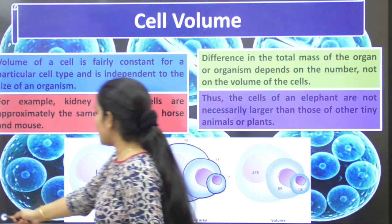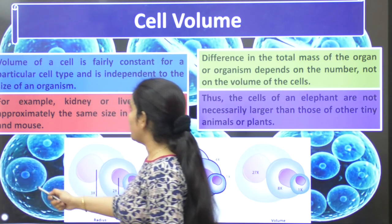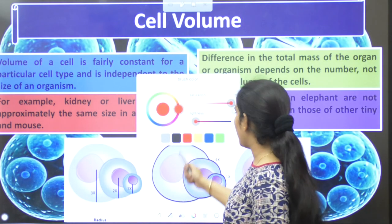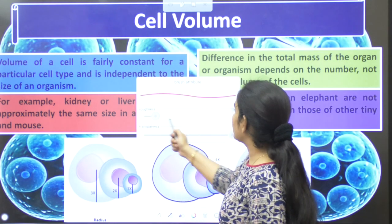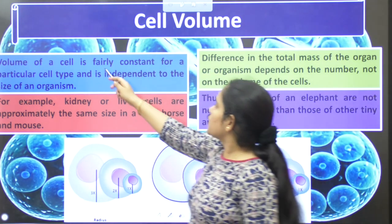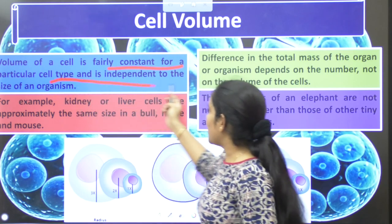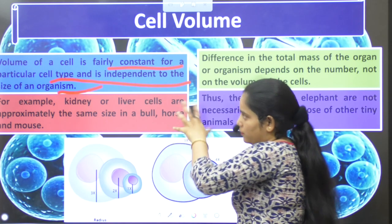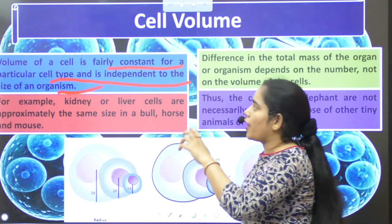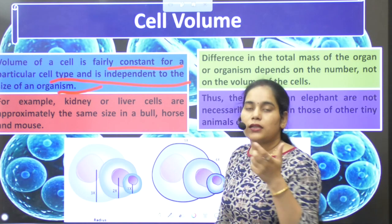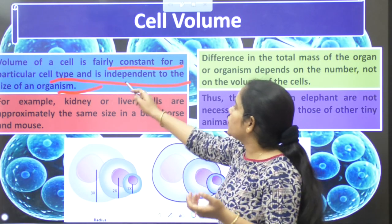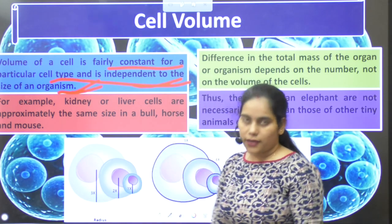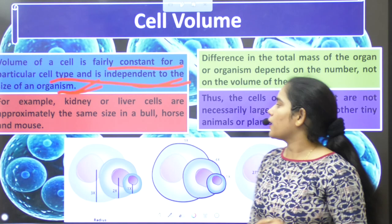So, if we talk about the volume of the cell — what is the volume of the cell? The volume of the cell particularly depends on the type of the cell. The volume of the cell is fairly constant for a particular cell type and is independent of the size of an organism.